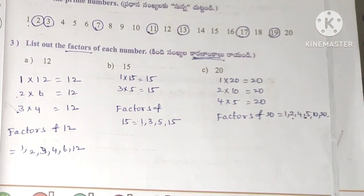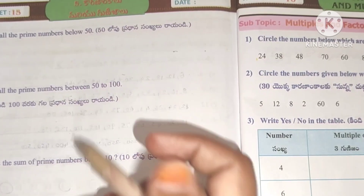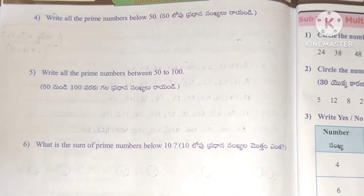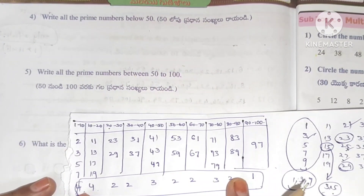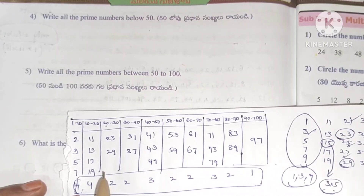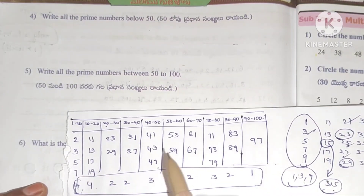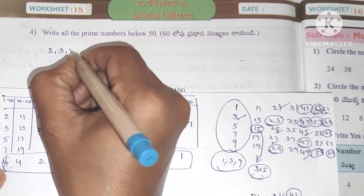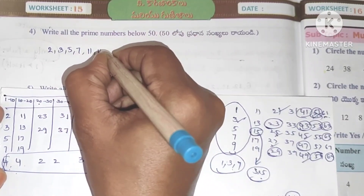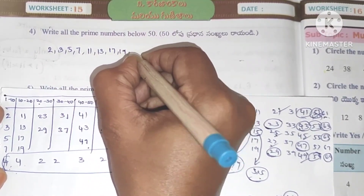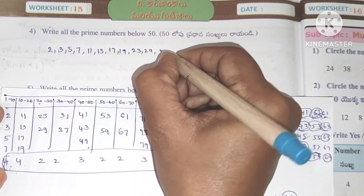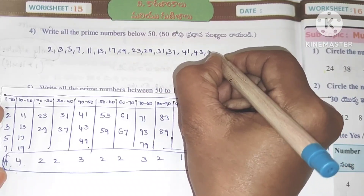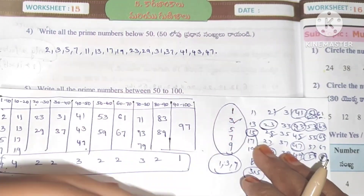4th question: write all the prime numbers below 50. Prime numbers below 50 are: 2, 3, 5, 7, 11, 13, 17, 19, 23, 29, 31, 37, 41, 43, 47.